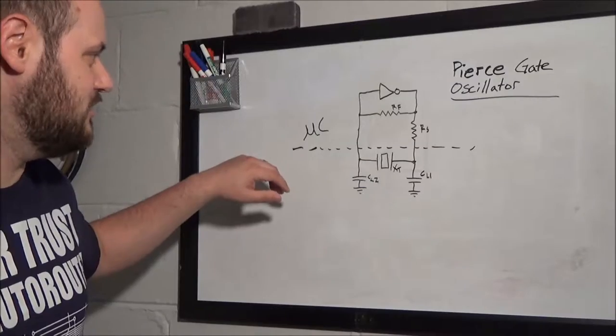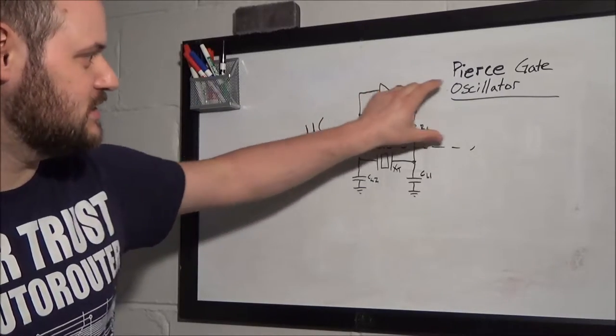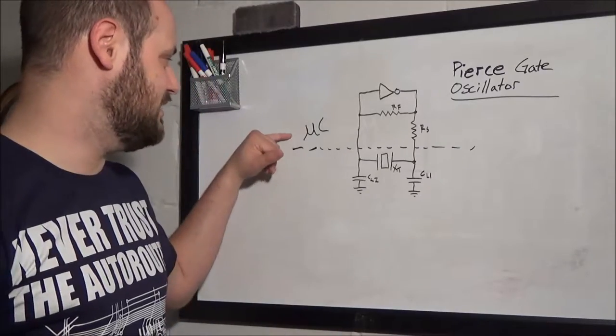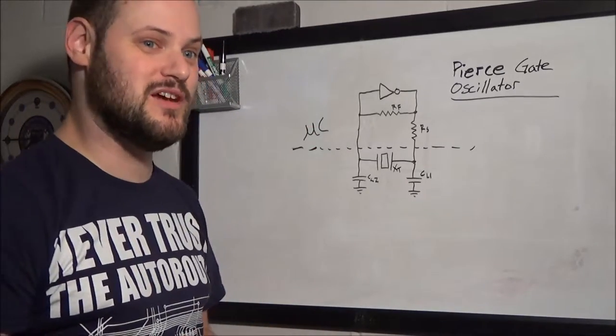Okay, so to start here, this is known as a Pierce Gate Oscillator. Probably didn't know that, did you? I didn't know it until recently, so don't feel bad. So, what I've drawn out here is, you can see this upper portion, is the electronics that's usually inside the microcontroller, stuff that you didn't know was there.